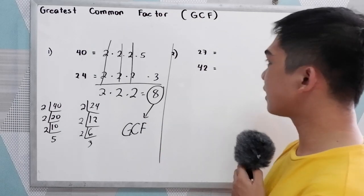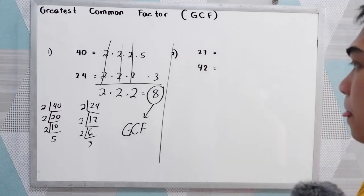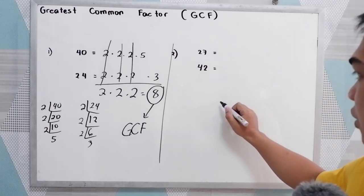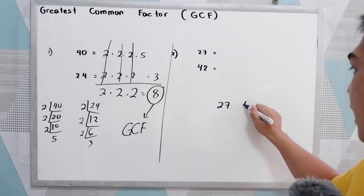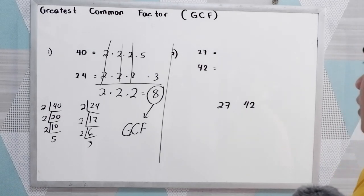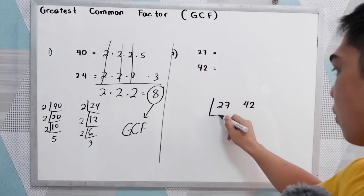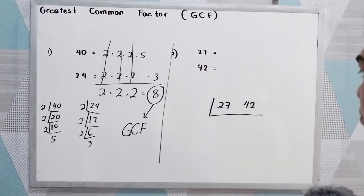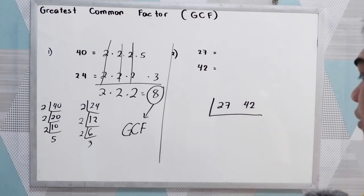Our second example: we have 27 and 42. Let us use the decomposition method again for 27 and 42.